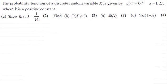Hi. This is a nice question if you'd like to revise discrete random variables. What we've got here is the probability function of a discrete random variable X given by p(x) = kx² where x takes on the values 1, 2 and 3, where k is a positive constant.